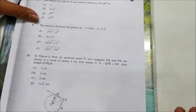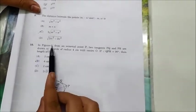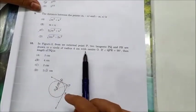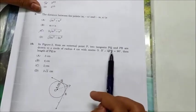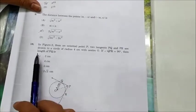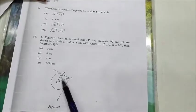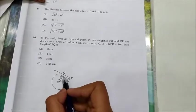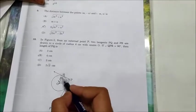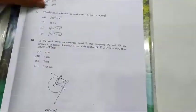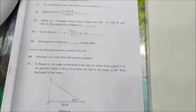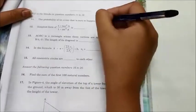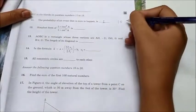Question number 10: In figure 3, from an external point P, two tangents PQ and PR are drawn to a circle of radius 4 cm with center O. If angle QPR = 90°, then length of PQ is... So when you will solve this, it will come to be a square. You need to join OR. This is a square with all angles equal to 90°. Therefore 4 = QP, that gives 4 cm is the correct answer. Next, fill in the blanks. Question 11: The probability of an event that is sure to happen is 1, because 100% gives the answer 1.